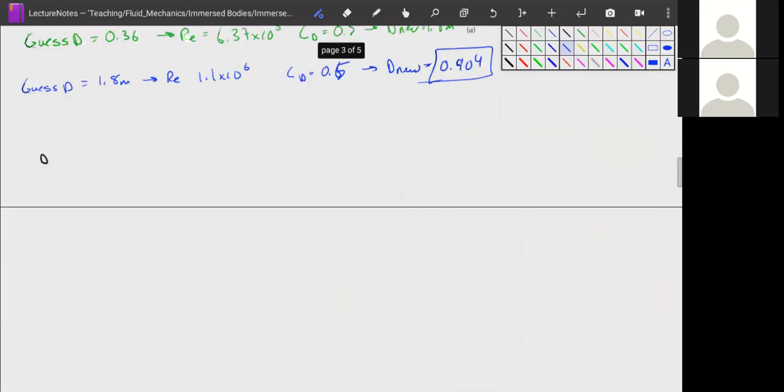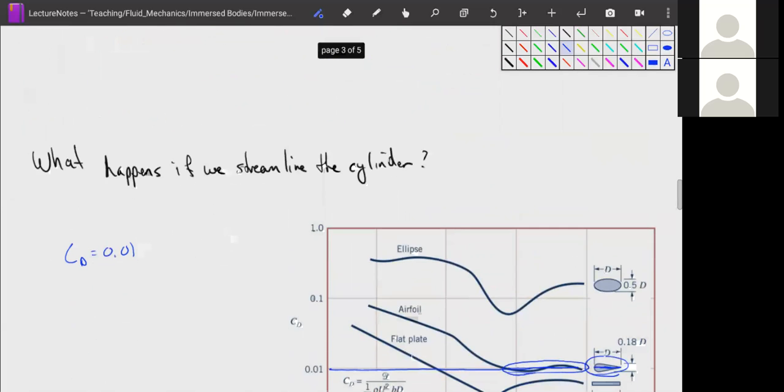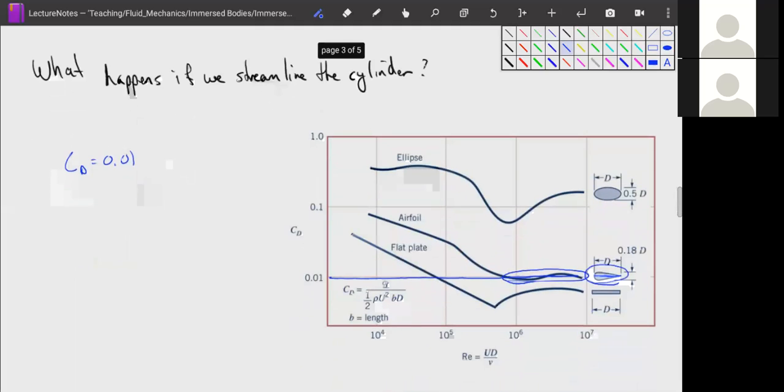Now if we compare that to what we got up here, our drag coefficient was 0.5. So already our drag coefficient is one fifth of what it was before. And if we plug that in, we solve for a diameter, or sorry, a distance d, which is equal to 54 meters.